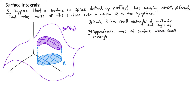To approximate the mass, I'm going to make two assumptions. First, I'm going to assume that the density is constant on this piece of the surface. I'm also going to assume that instead of having a curved surface, I just have a flat plane. These two assumptions will help me approximate the mass of the surface much more easily.